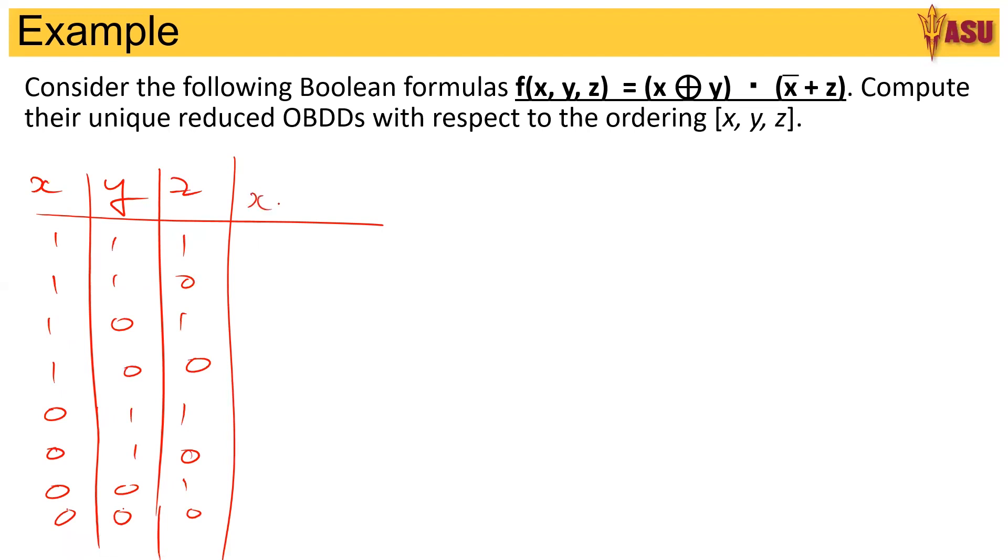Now we have the first part that is x xor y. So that's true only if x is true or y is true, not both. So x and y are true. So that is 0, 0, 1, 1, 1, 1, 0, 0.